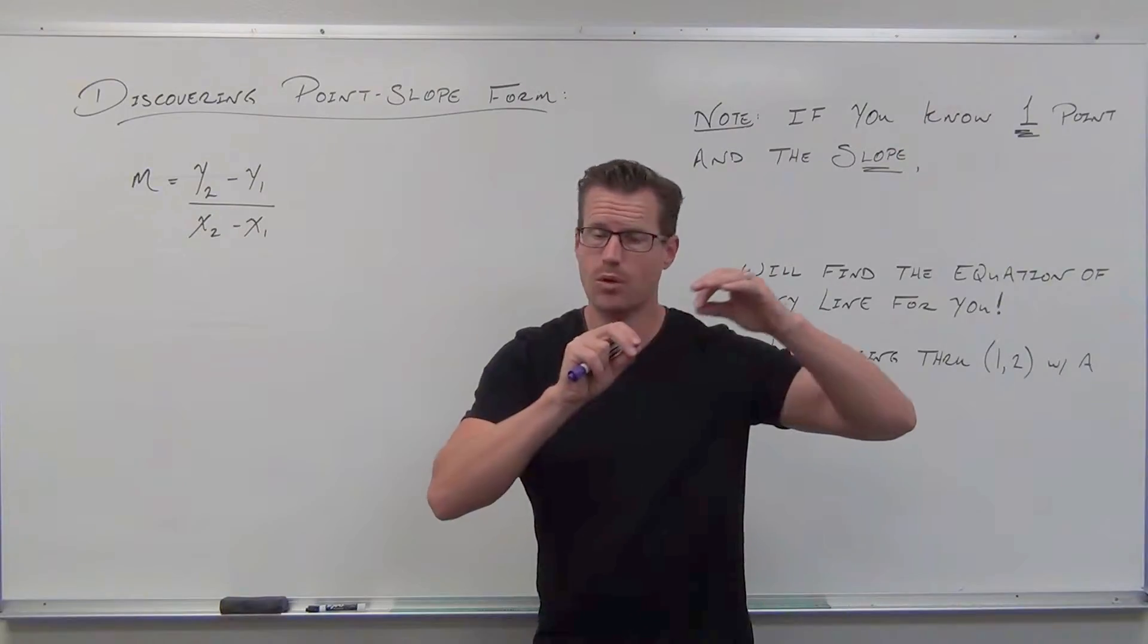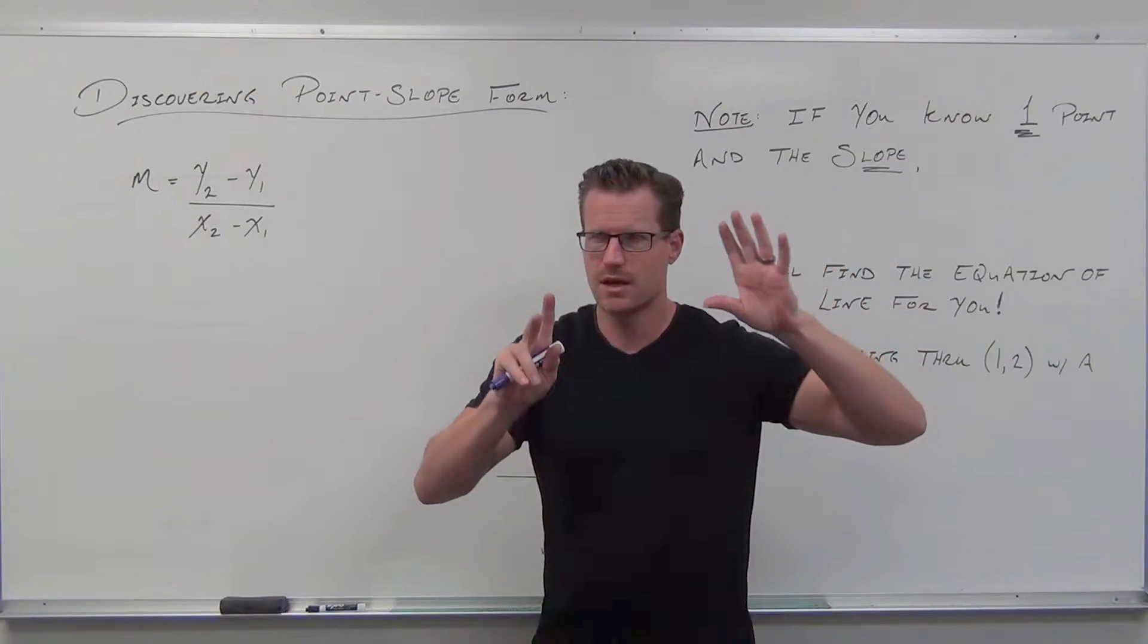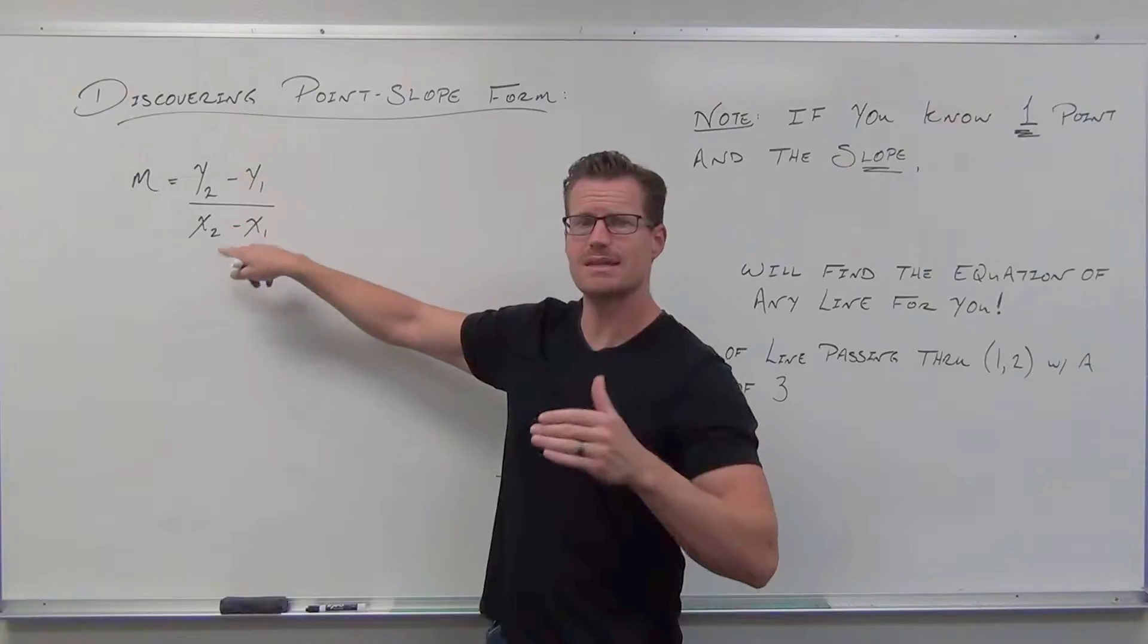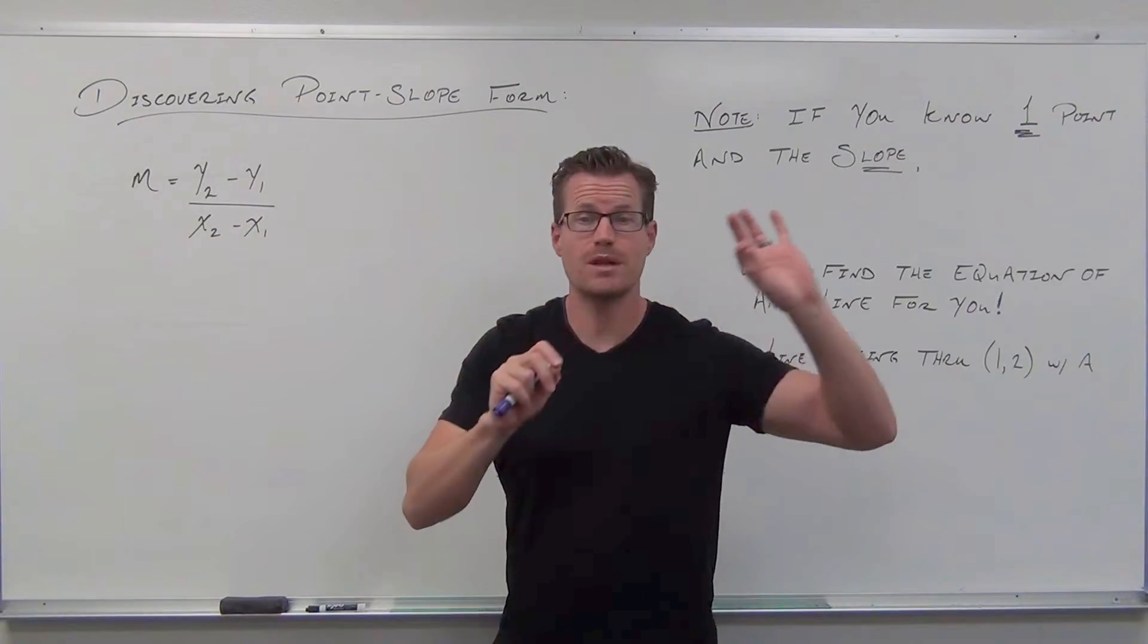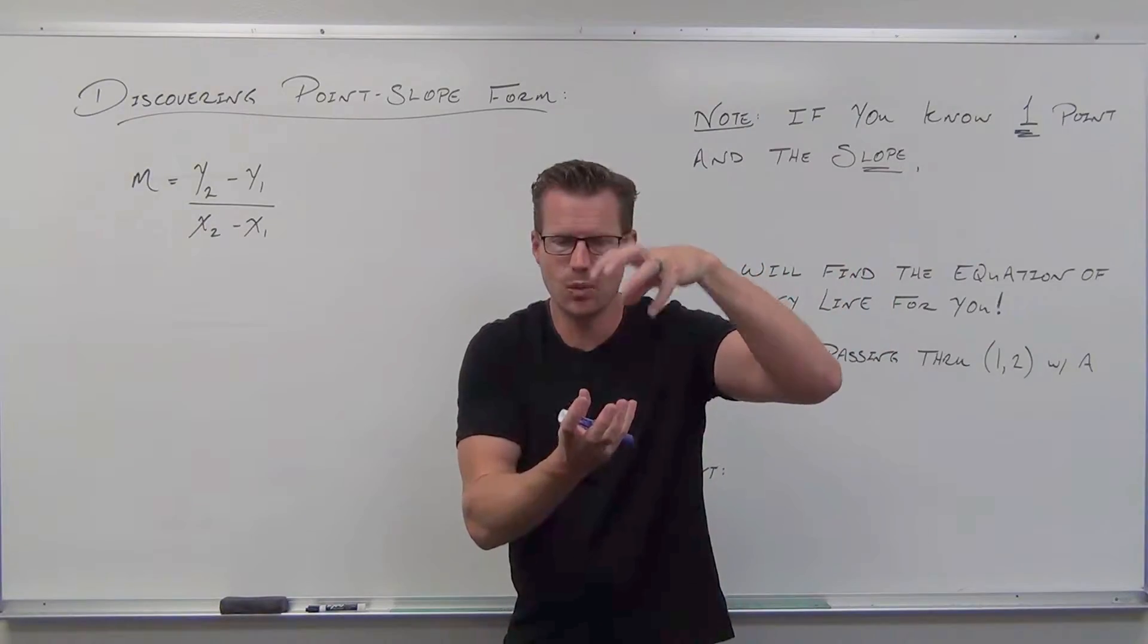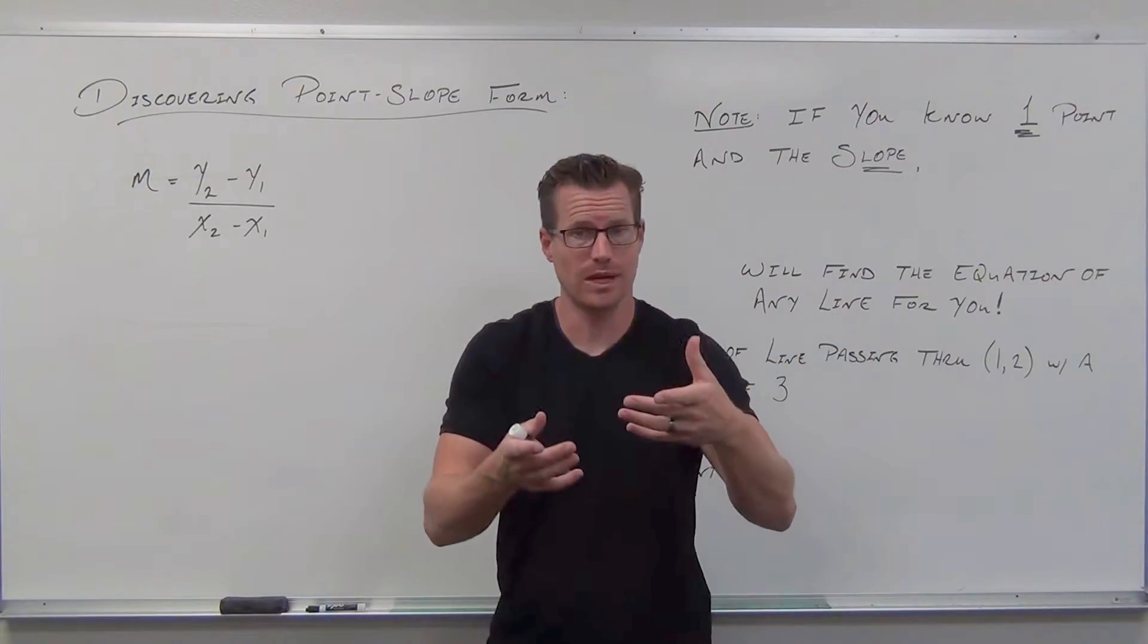Basically, we use a slope to find any other point ever. We allow that to be a variable point, so it's just anything on the line. From the slope formula, let's leave one of them fixed, but let's let the other one float.